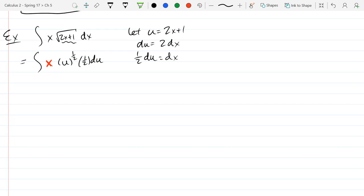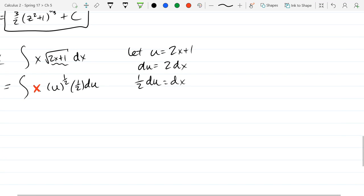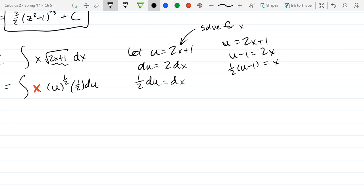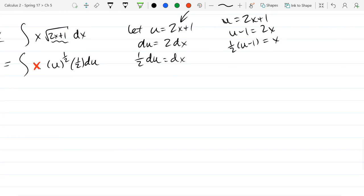So I'm going to erase, well I'll leave that x in for now. What I need to do now is solve for this x. So I'll subtract 1, u minus 1 equals 2x and divide by 2. So I can now take out x and replace it by 1 half times u minus 1.